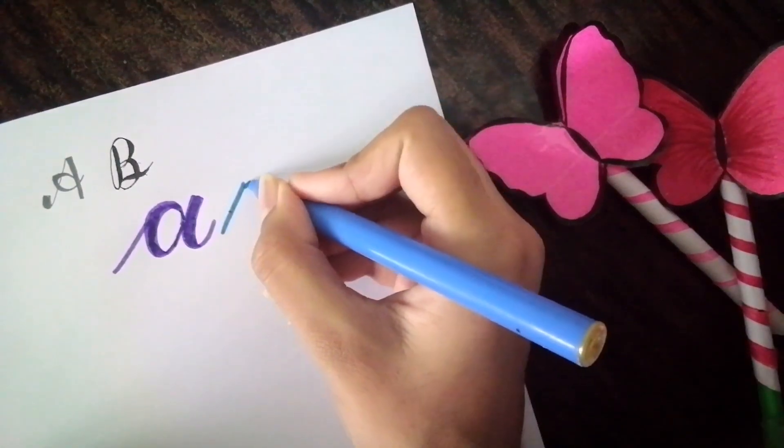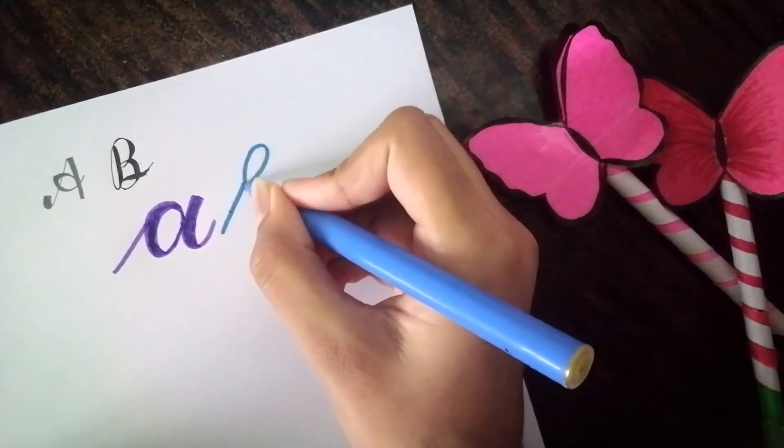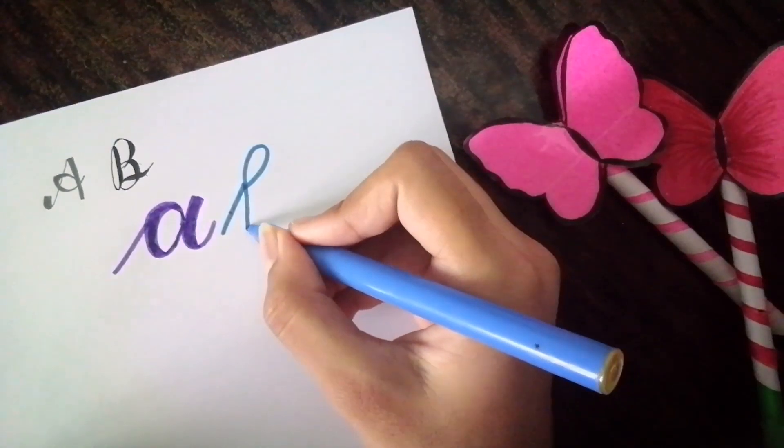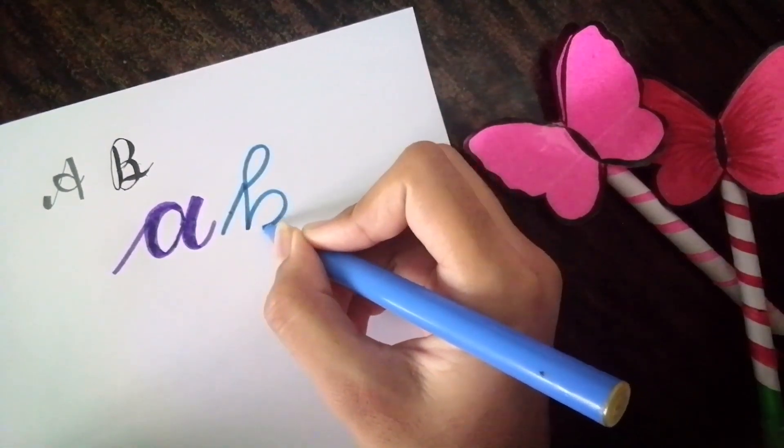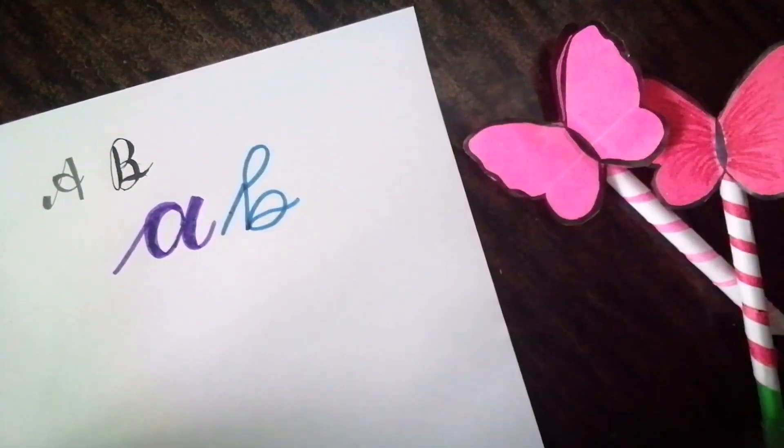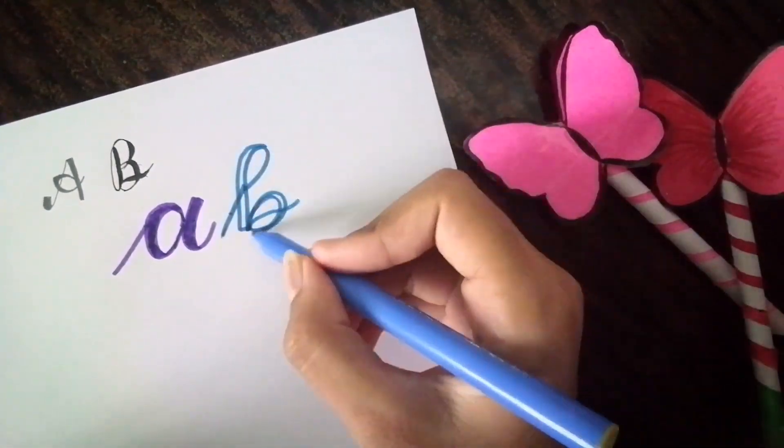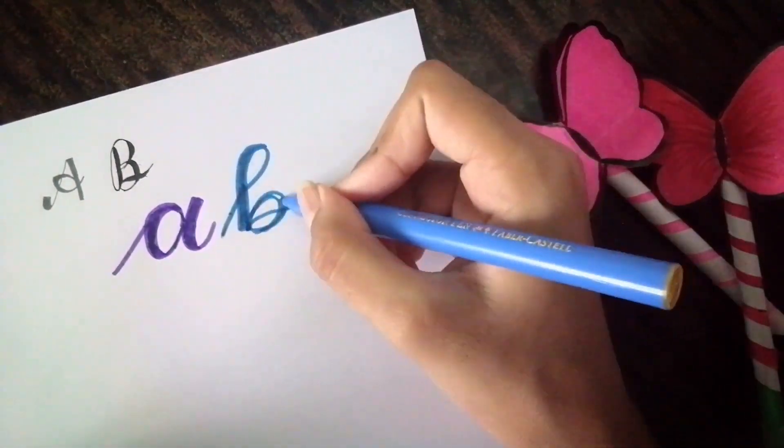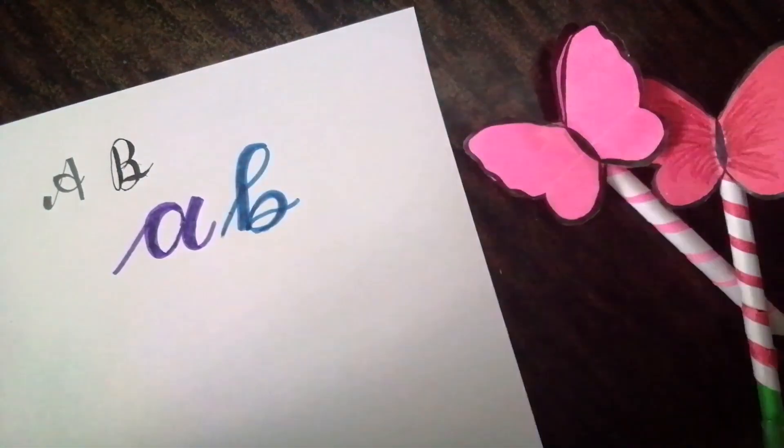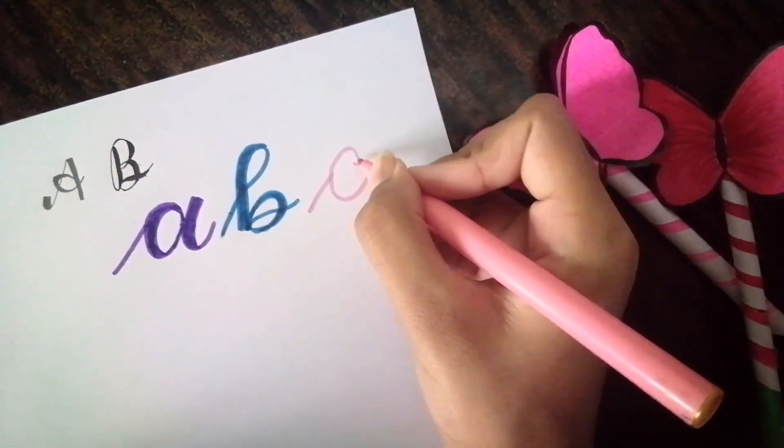Now let's draw the letter 'b.' This is a different type of 'b' which is used in calligraphy. Follow rule number two, then rule number three, which is to color. Now here comes the letter 'c.'